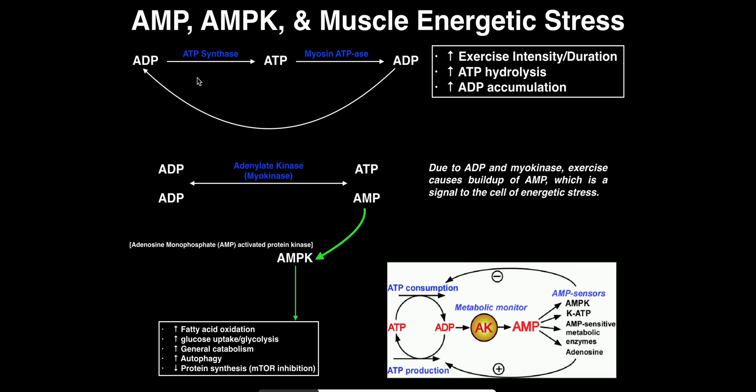Before we get into that, I want to review this general scheme, which you've probably seen over and over again in your ex-phys course, possibly anatomy and all that. The enzyme ATP synthase, which is a part of oxidative phosphorylation in the mitochondria of skeletal muscle cells, is going to convert ADP to ATP. That's the predominant source of the majority of ATP that a cell can produce — any cell really, but we're talking about muscles here.